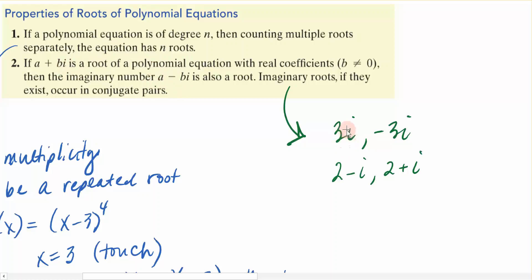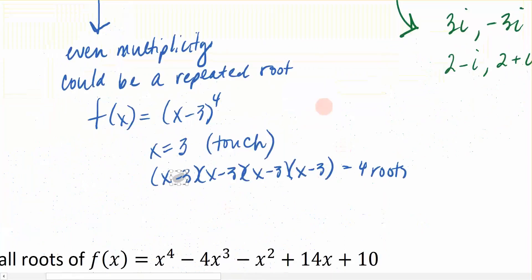Over here I have kind of an example. If I know that I have a root of 3i, which is imaginary, then its conjugate is negative 3i. And both of these numbers would be the complex roots of my polynomial because they have to come in a pair. So if I have 2 minus i for a root, I automatically know I'm going to have 2 plus i.